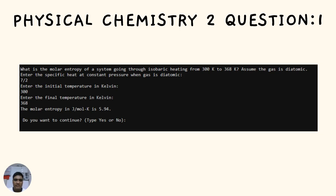Question number one of Physical Chemistry 2: What is the molar entropy of a system going through isobaric heating from 300 Kelvin to 368 Kelvin? Assume the gas is diatomic. We need to enter the specific heat at constant pressure — for a diatomic gas it is 7/2. Enter the initial temperature of 300 Kelvin and the final temperature of 368 Kelvin. The molar entropy is 5.94 joules per mole Kelvin.